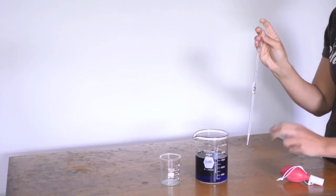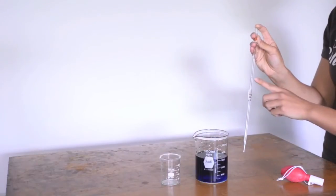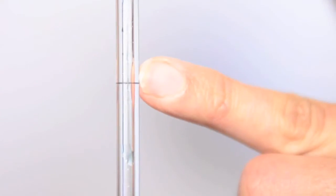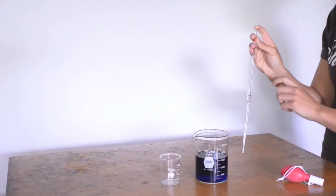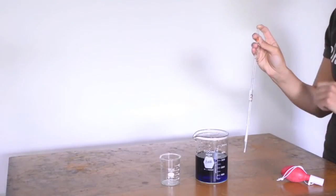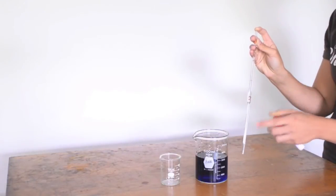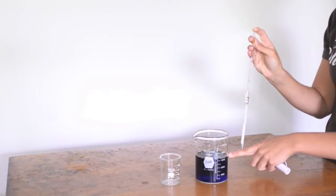Volumetric pipettes are used to deliver a single, fixed volume of liquid. The pipette is filled with liquid to a designated graduation mark, then the liquid is dispensed. We will use a 2 milliliter pipette to dispense the hydrogen peroxide. To use a pipette, you will also need a pipette bulb and solution. Here we will use colored water as our demonstration liquid.